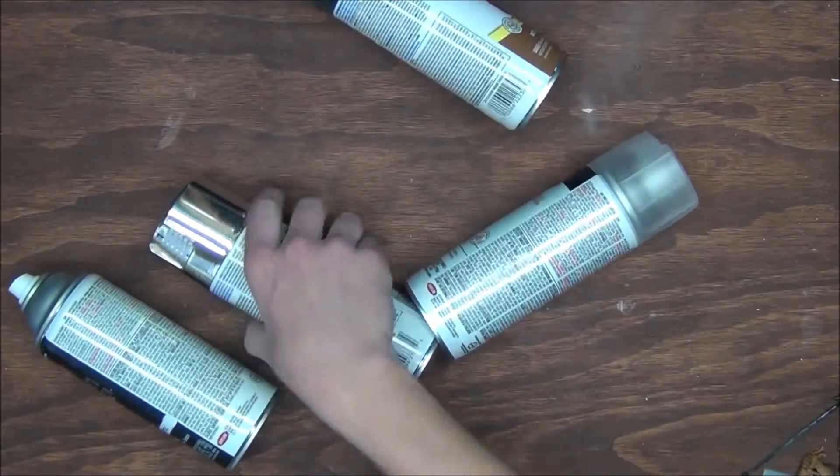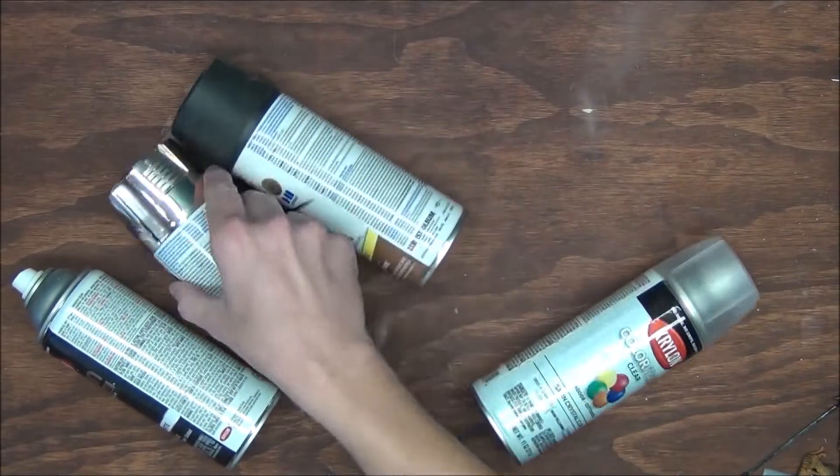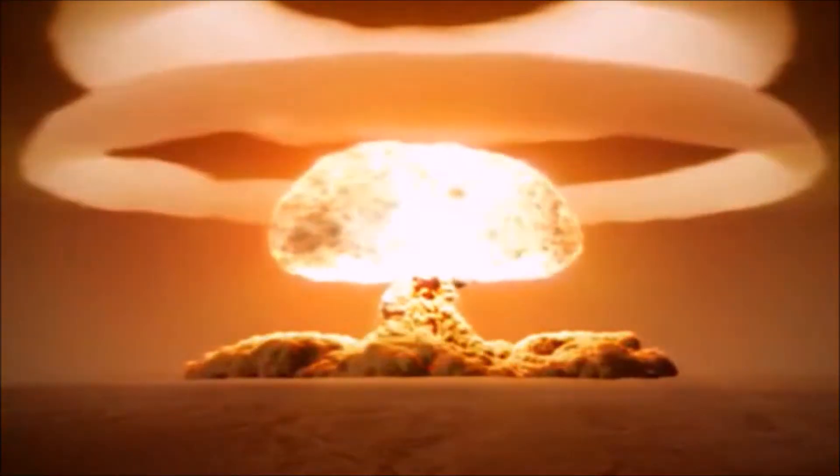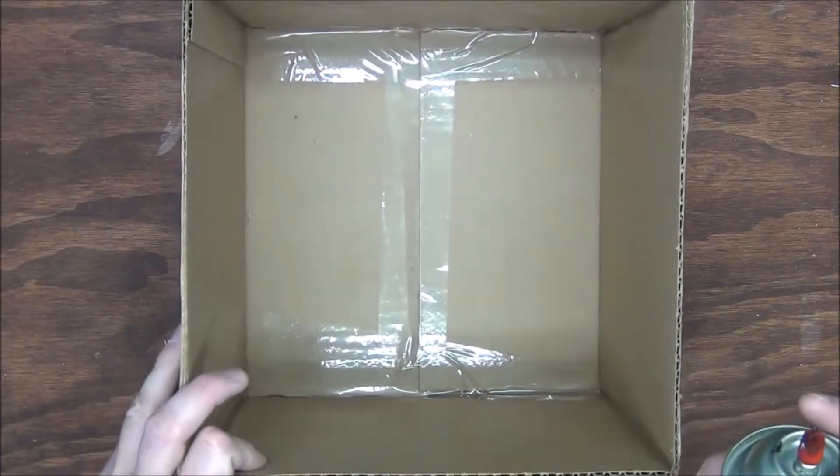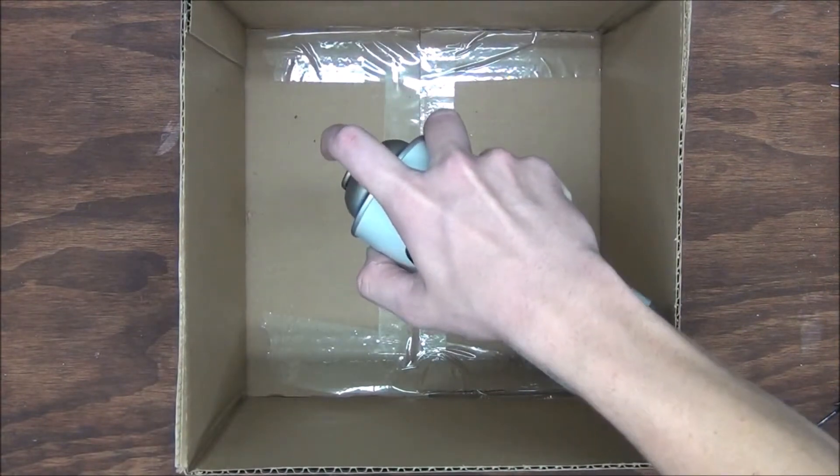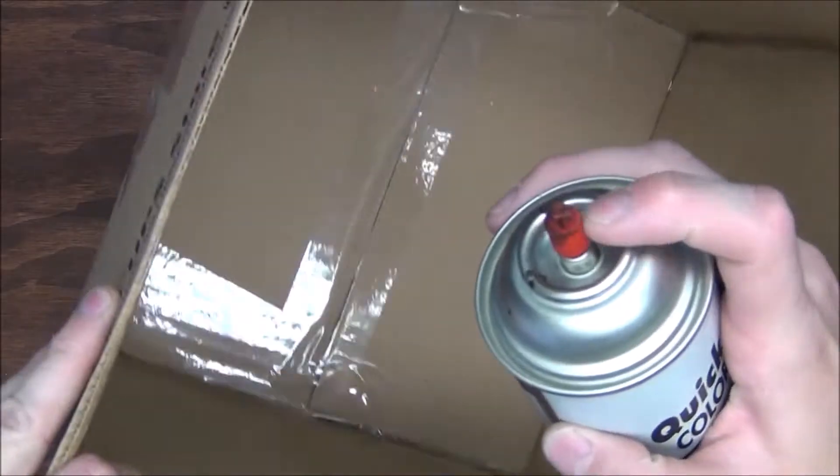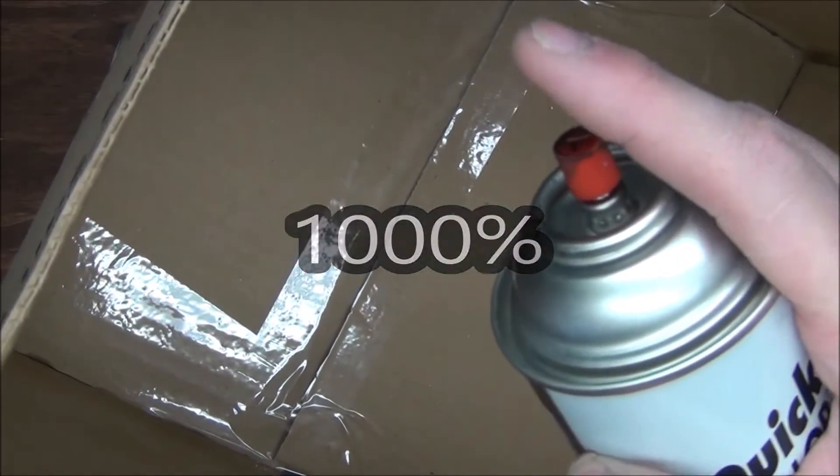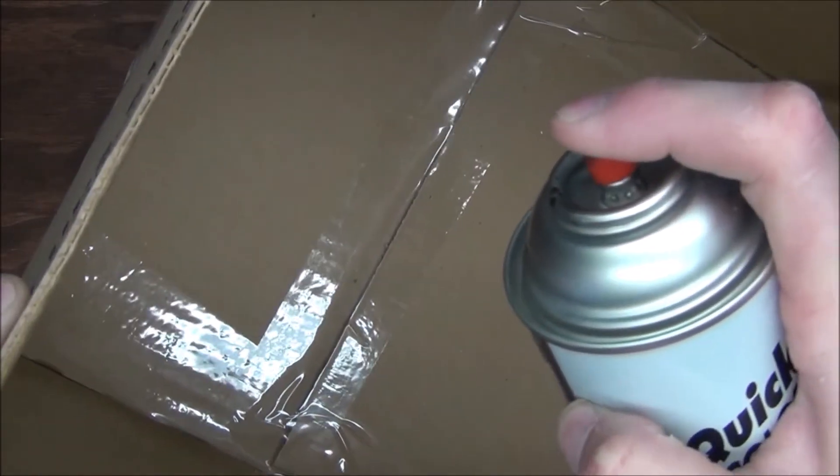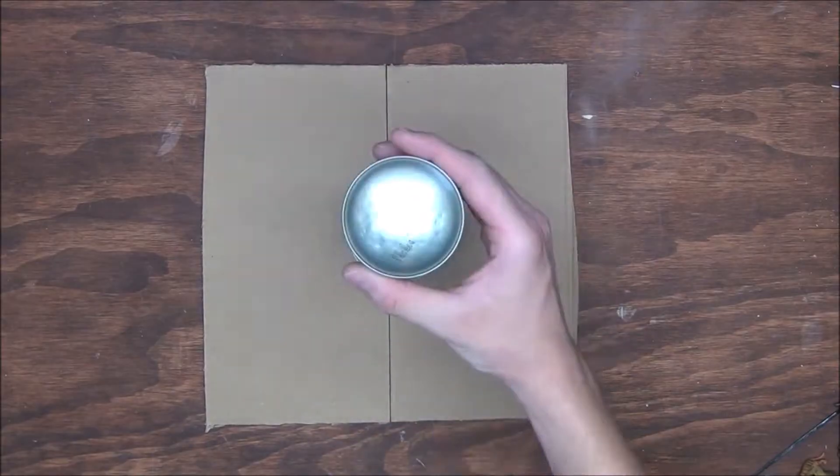Now the first thing we need to do is to make sure our empty cans are actually empty, because cutting into a pressurized can is a terrible idea. So I'm just going to spray into this empty cardboard box until we've let all of the pressure out. Once we have let all the pressure out and we are 1000% positive the can is empty, we can now move ahead and cut into it.